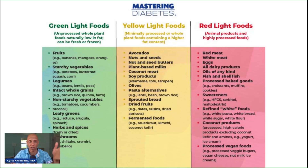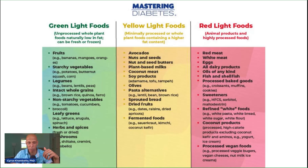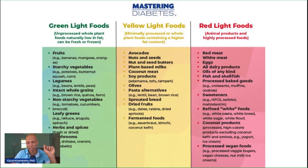In the middle column, you have yellow light foods. These are foods that are minimally processed or considered whole plant foods, but they have a slightly higher fat content and a slightly higher calorie content. These include avocados, nuts and seeds, nut and seed butters, plant-based milks, coconut meat, soy products like edamame, tofu, and tempeh, olives, pasta alternatives, sprouted breads, dried fruits, and fermented foods. These foods have a slightly higher calorie and fat count than green light foods, so we eat them in moderation.